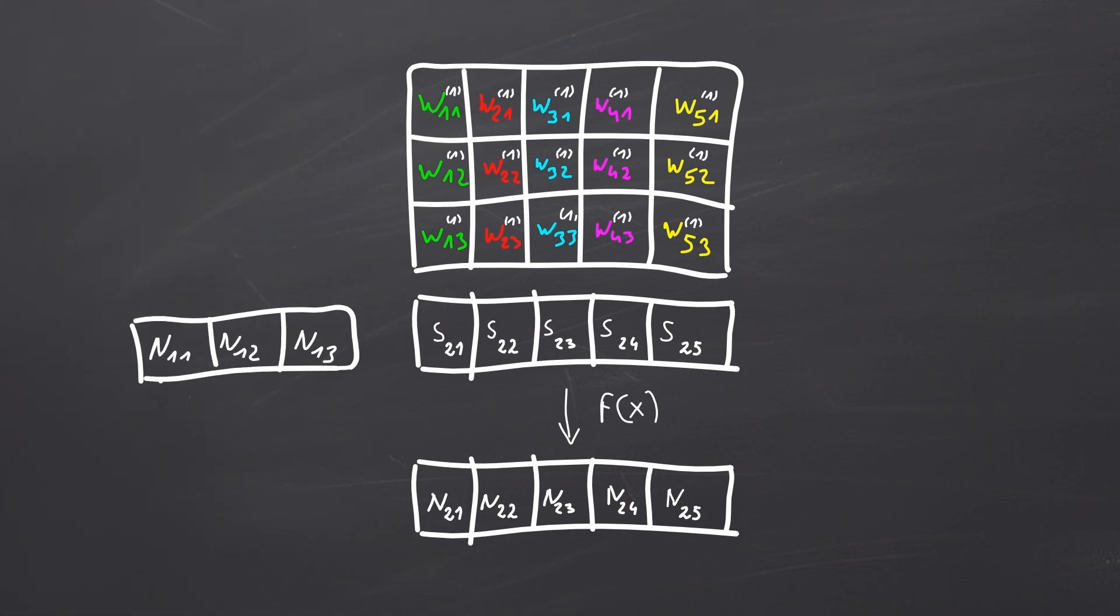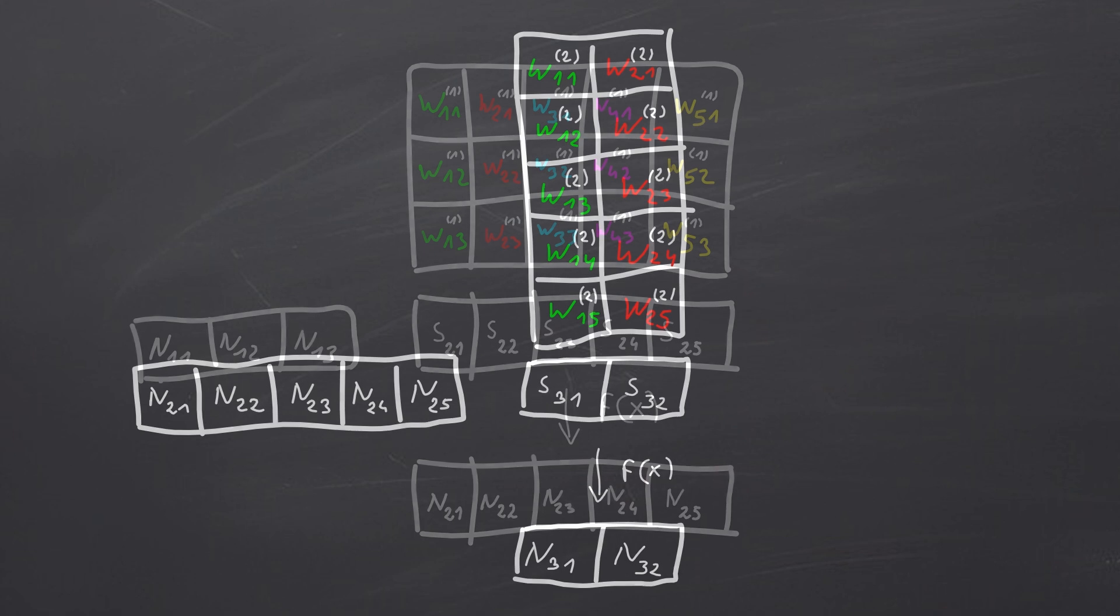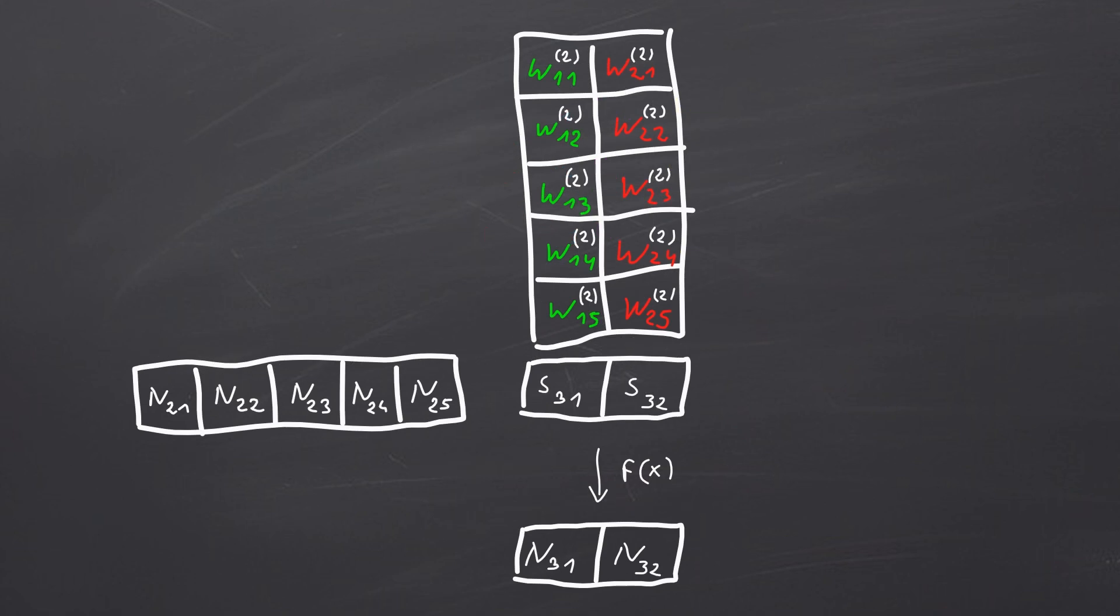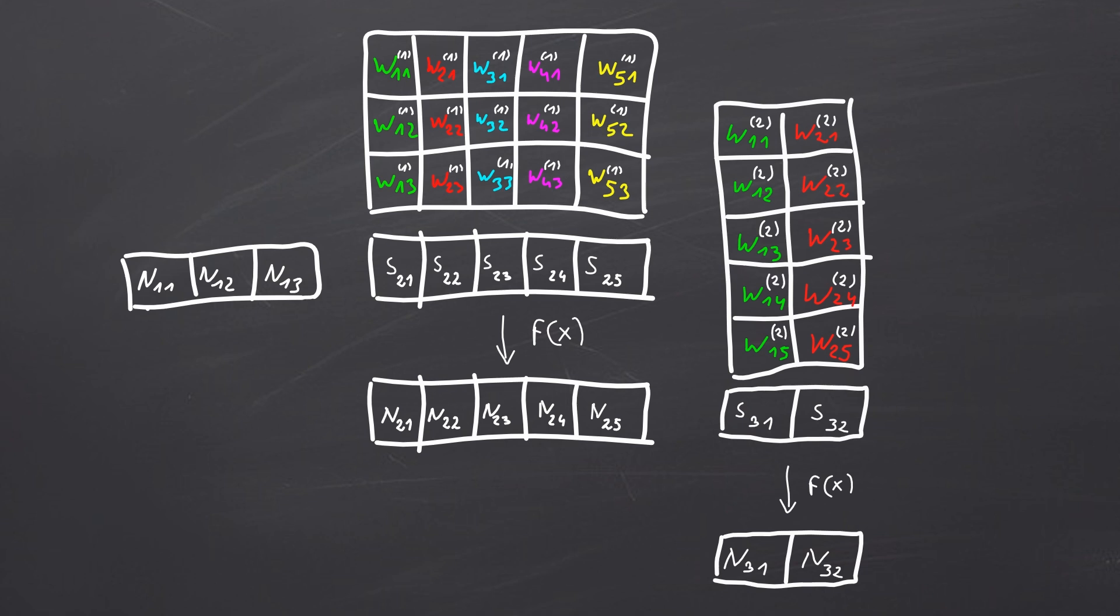We can break down the forward pass into the following steps. On the left we have our input vector. At the top we see our weight matrix. The S value represents the output from the multiplication. As mentioned earlier, we can calculate the S value by multiplying the input vector, in a row, with each column of the weight matrix. Next, we apply the activation function to each S element. We repeat this process for the next layer.